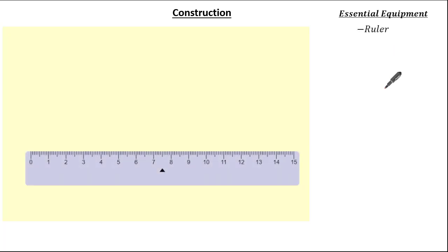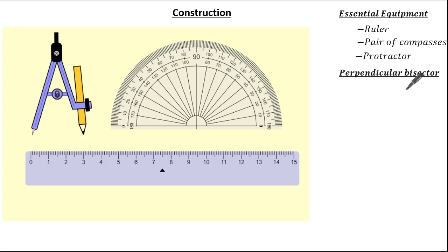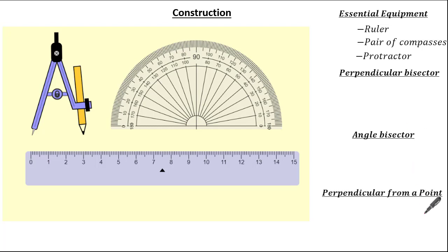Hello everyone and welcome to this tutorial on construction. Whenever you're asked to construct in your exam, you're expected to have the correct mathematical equipment: a ruler, a pair of compasses, and a protractor. In today's lesson, we'll be learning how to construct a perpendicular bisector, an angle bisector, and a perpendicular from a point.